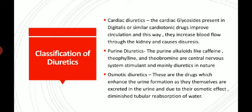Purine diuretics: the purine alkaloids like caffeine, theophylline, and theobromine are central nervous system stimulants and are mainly diuretic in nature. These purine alkaloids — caffeine, theophylline, theobromine — mainly show their diuretic action.